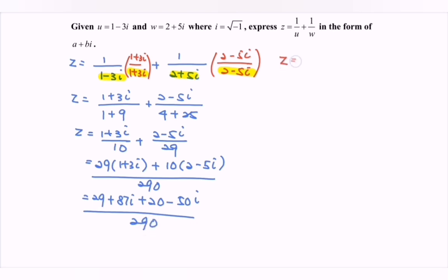So finally, z equals, focusing on the real part, 49 over 290, and then plus 37i over 290. That is z in the form of a plus bi, or we can say Cartesian form.